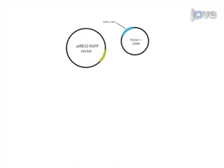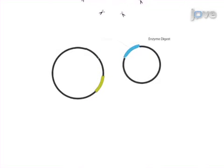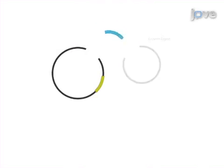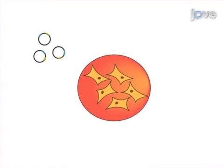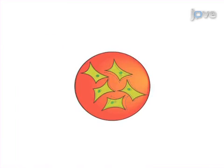This is achieved by subcloning the full cDNA sequence of human D2R or NMDAR within a plasmid. As a second step, a human cell line is transfected, which leads to the cell surface expression of neuronal antigens.